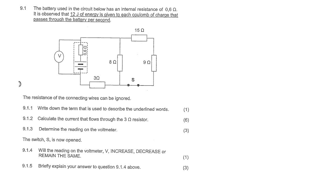Hello everyone, so here is another electricity question. The first question says write down the term used to describe the underlined words. So here we can see the underlined words, it says 12 joules of energy is given to each coulomb of charge that passes through the battery per second.